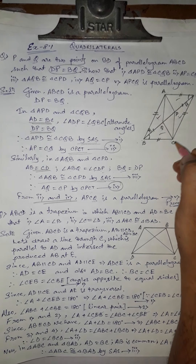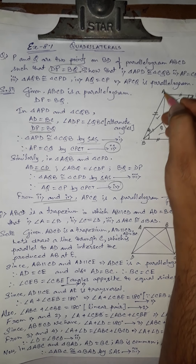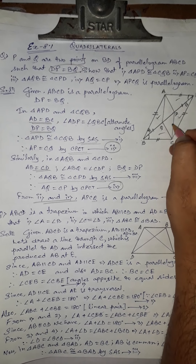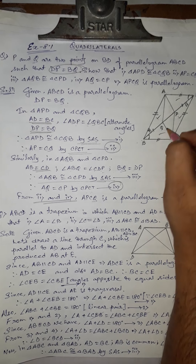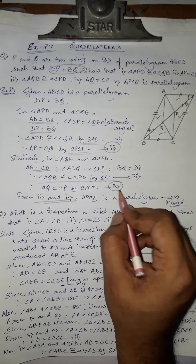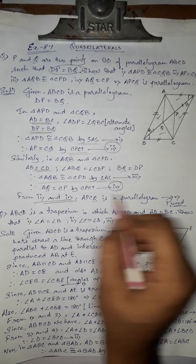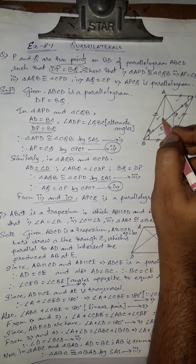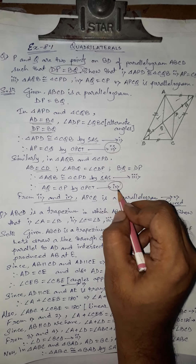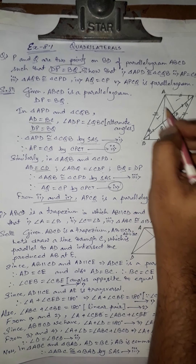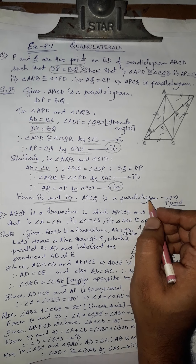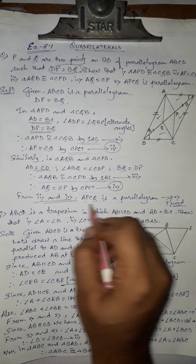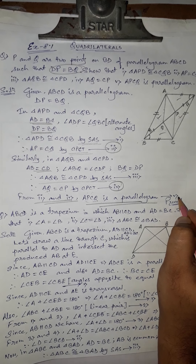From number two and number four: AP equals CQ and AQ equals CP. These are the two pairs of opposite sides of quadrilateral APCQ. Since both pairs of opposite sides are equal, by the property that a quadrilateral with equal opposite sides is a parallelogram, APCQ is a parallelogram. That is the last proof, number five.